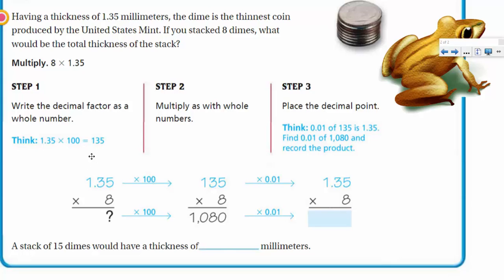You may recall there was another video where we did that. We called it renaming it, right? Step two says multiply as with whole numbers. And are they showing that as an example here yet? Doesn't look like it that I can see. I guess they are. Here it is. Here they multiply that by 100. We don't know what the answer is yet. And here it says that, oh, we have times 100. Got that. And then over here it says place the decimal point. Well, think. One hundredth of 135 is 1.35. So find one hundredth of 1,080 and record the product. And so here it's basically we're going back after we've multiplied this with whole numbers. Now it shows us that, okay, that one hundredth of that factor is this. And so then we're going to take one hundredth of that 1,080. So here we have the 10.80. So a stack of 15 dimes would have a thickness of, again, we're going to put 10. And we can just put 10.8. The zero is not necessary in this case.